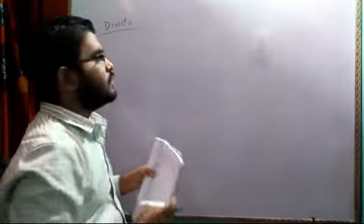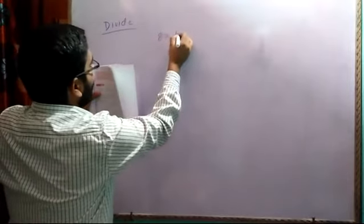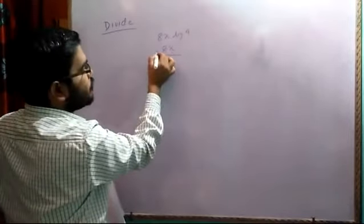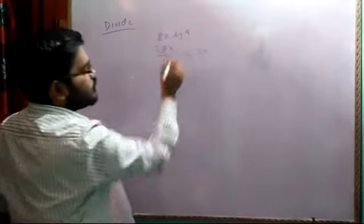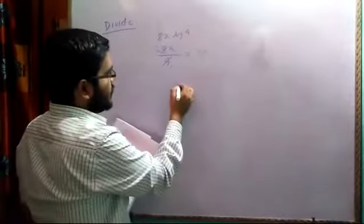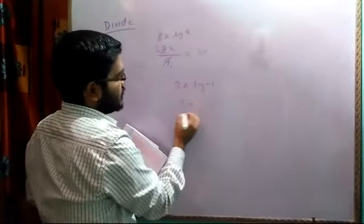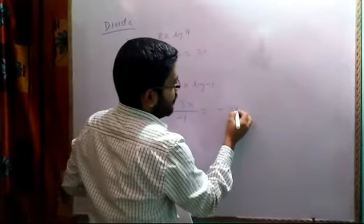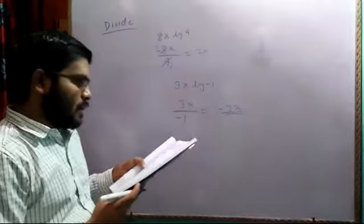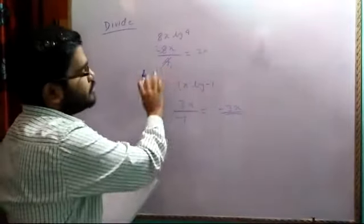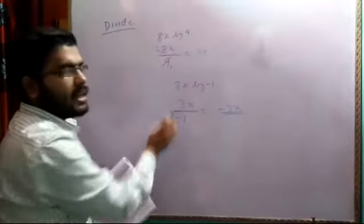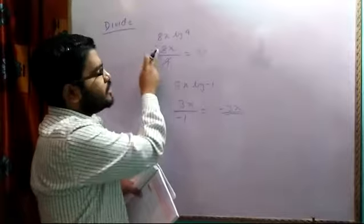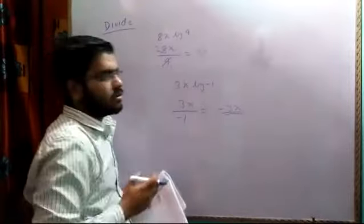The first rule says: when we have a monomial divided by a monomial, here we are having 8x divided by 4. The constant is divided by the constant: 4 twos are 8, so it becomes 2x. Another example: 3x divided by minus 1. Since the denominator has a minus sign, it goes to the numerator, so the answer is minus 3x.